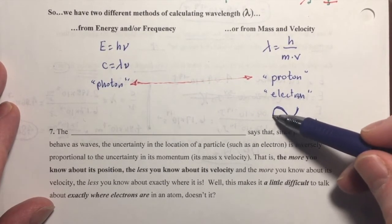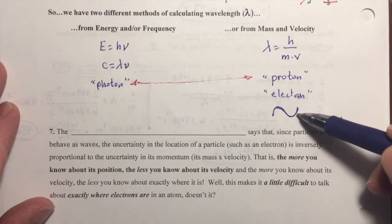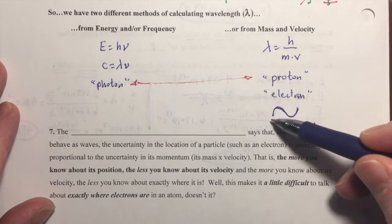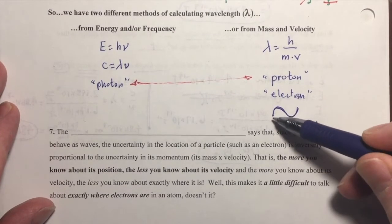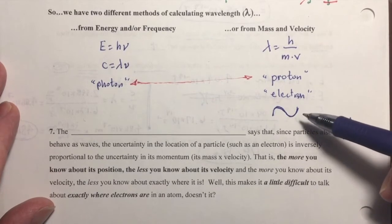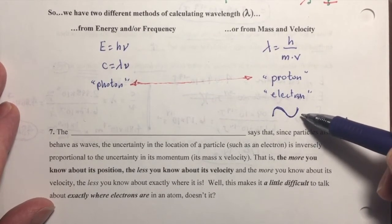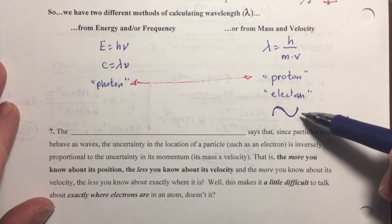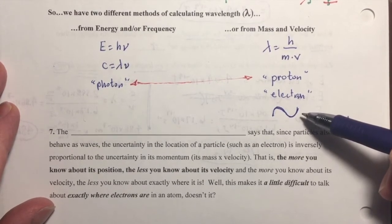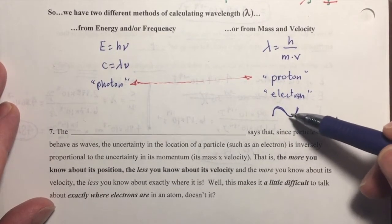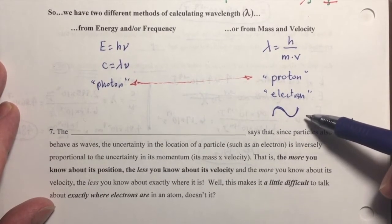If an electron can be thought of as a wave, then you might think of the electron as being smeared out or spread out over this whole region of space. Well, if you think of an electron that way, then it becomes very difficult to talk about where an electron is exactly in a given moment and where exactly it is traveling and how fast exactly it is doing so.